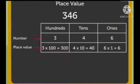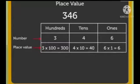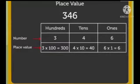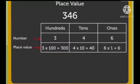Now I am going to explain the positions of these numbers. Here, 3 is multiplied by 100 because it is at the 100's place, so 3 multiplied by 100 is equal to 300. And 4 is at the 10's place, so it is multiplied by 10; that is, 4 multiplied by 10 is equal to 40. And 6 is at the 1's place, so 6 multiplied by 1 is equal to 6.